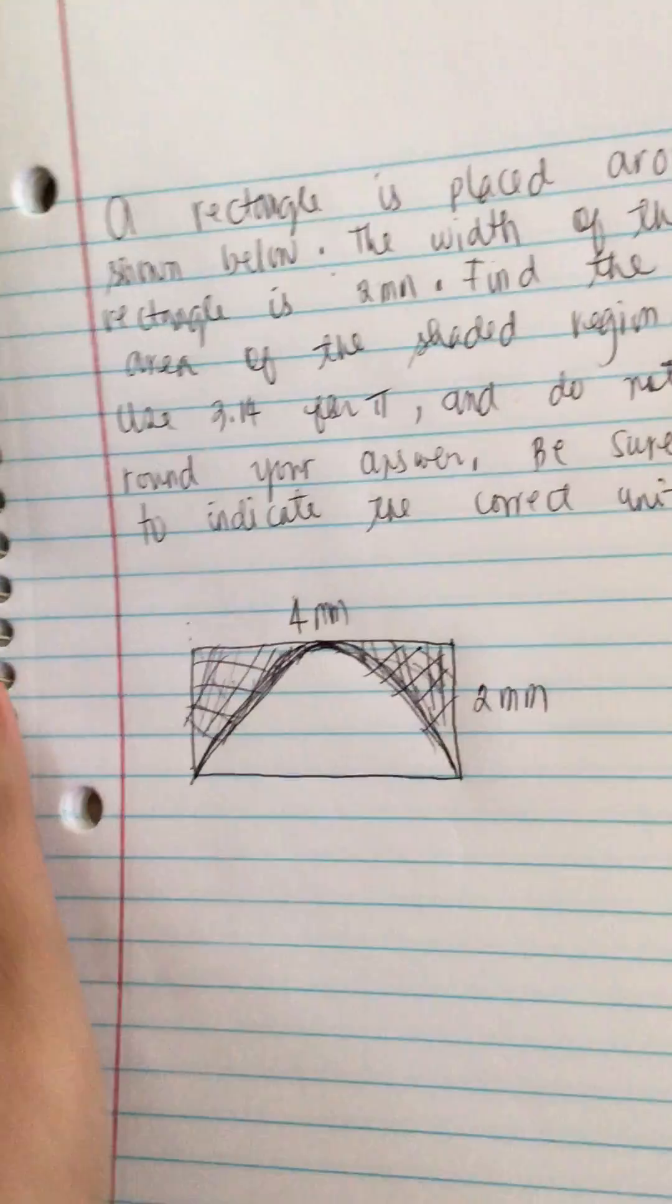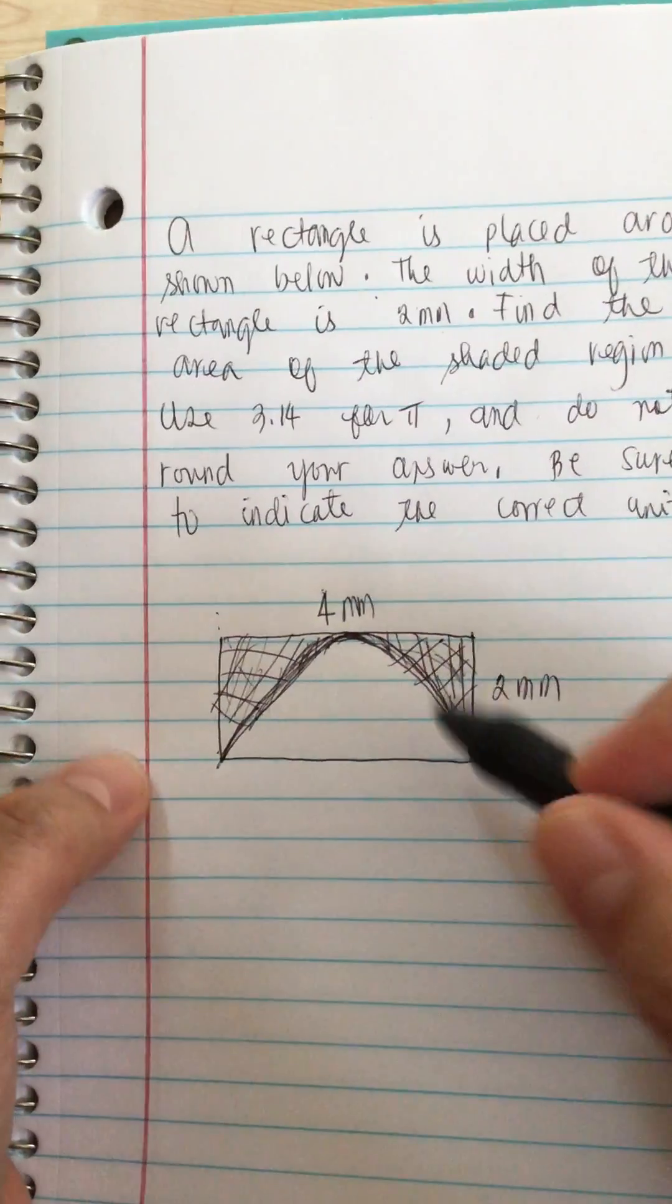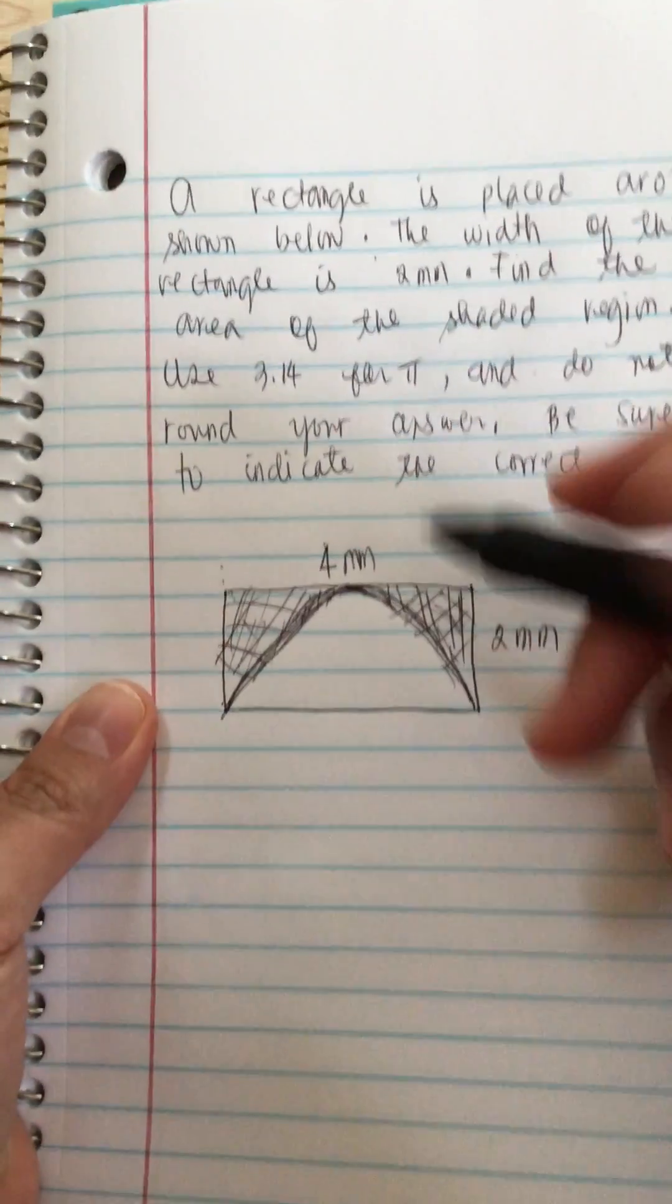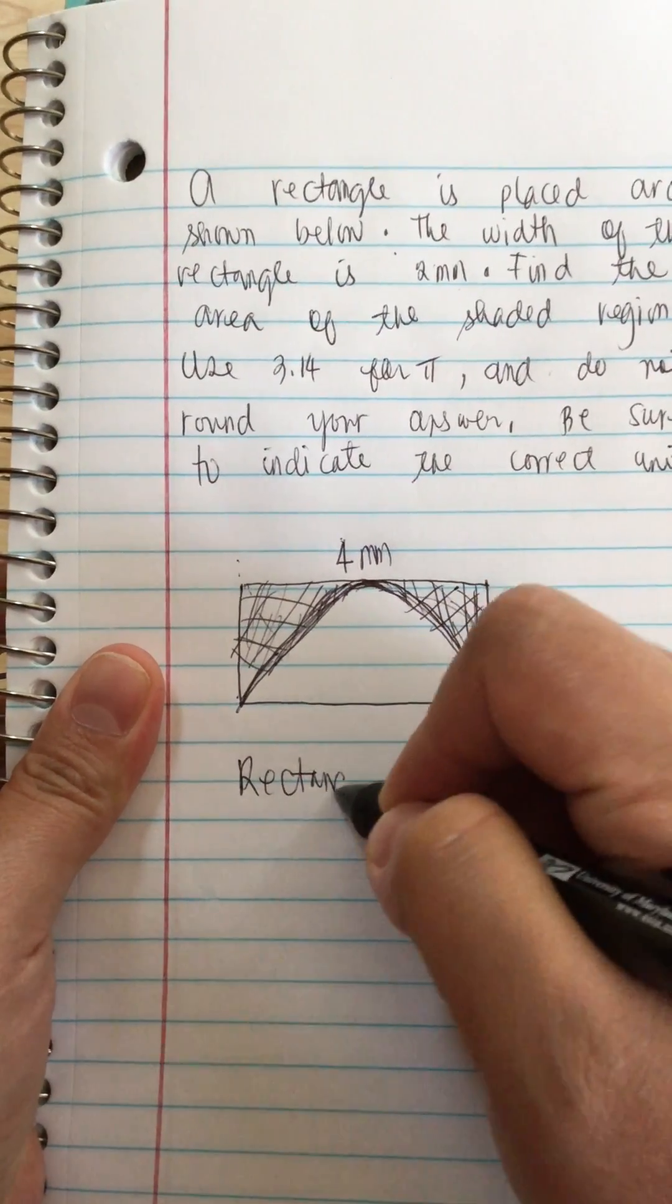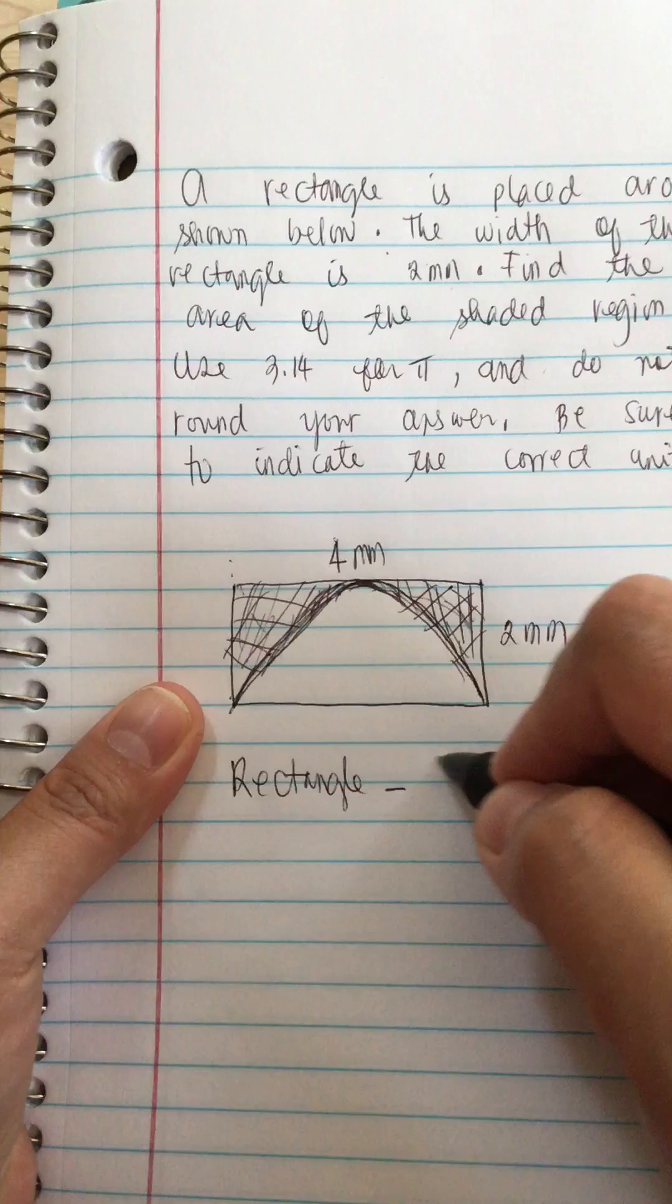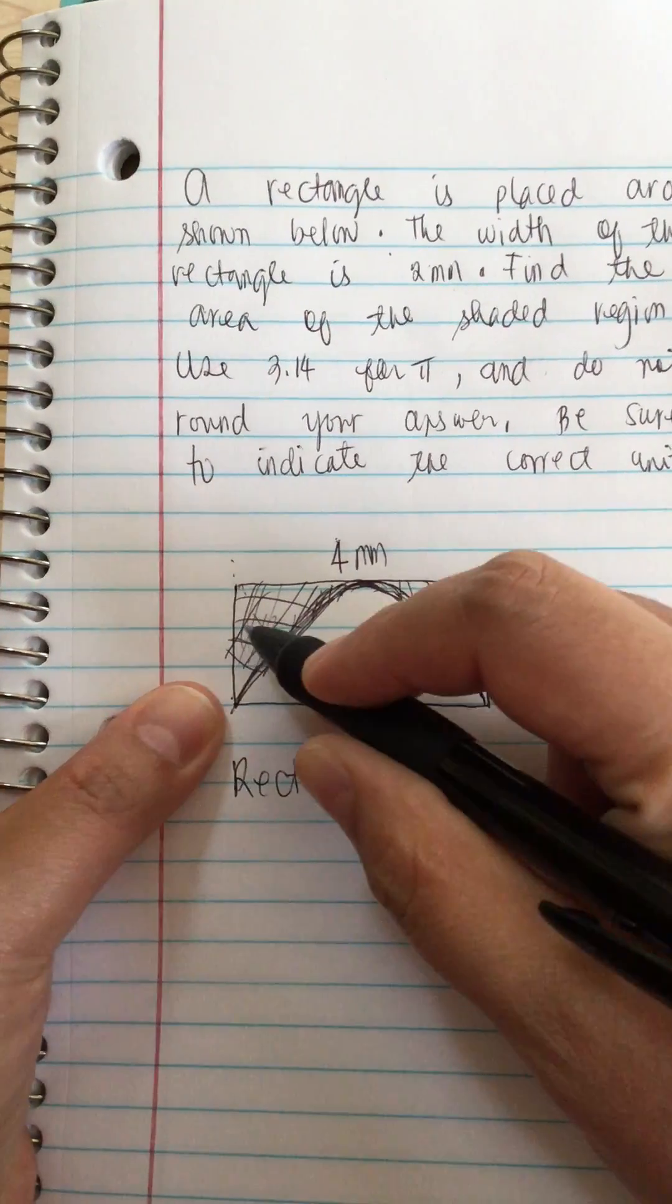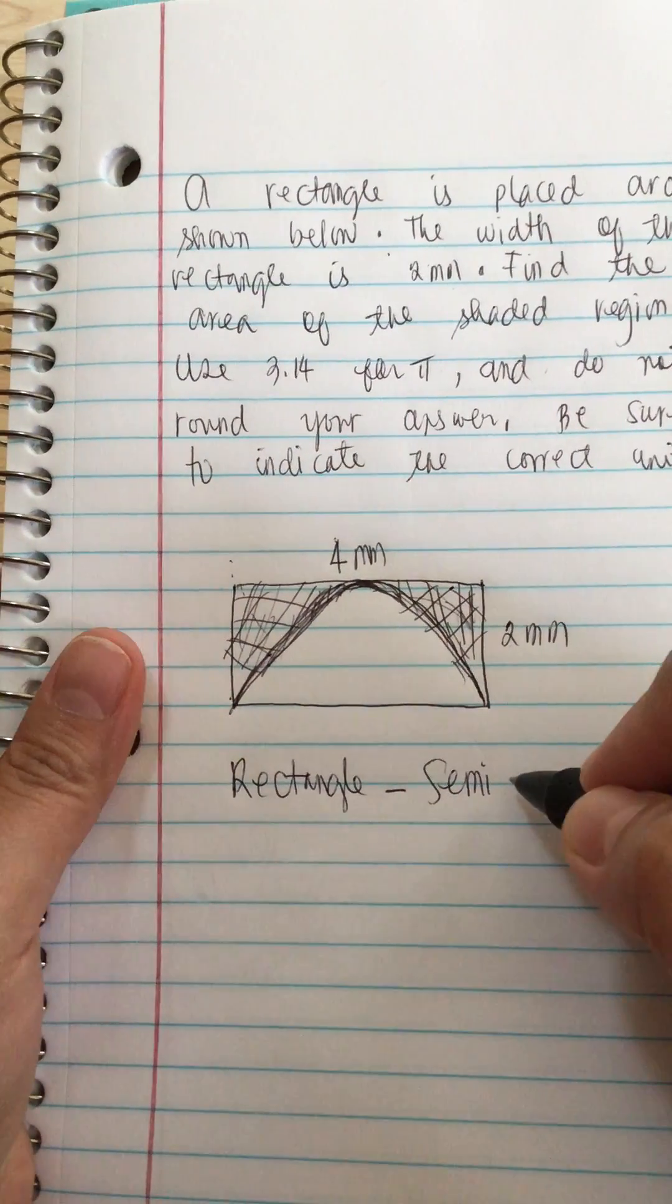So now we have the rectangle. We have rectangle minus the semicircle will give us the area of the shaded region.